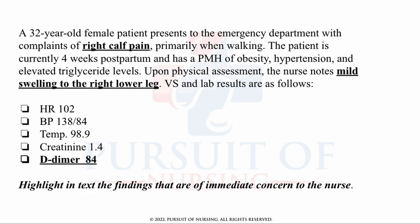The correct findings of immediate concern are right calf pain, mild swelling to the right lower leg, and a D-dimer of 84. The presence of calf pain, leg swelling, and an elevated D-dimer is concerning for a diagnosis of DVT. You should also recognize that the patient is postpartum with a history of obesity, putting her at greater risk for DVT development. You could also suspect a DVT if she were complaining of chest pain or shortness of breath.